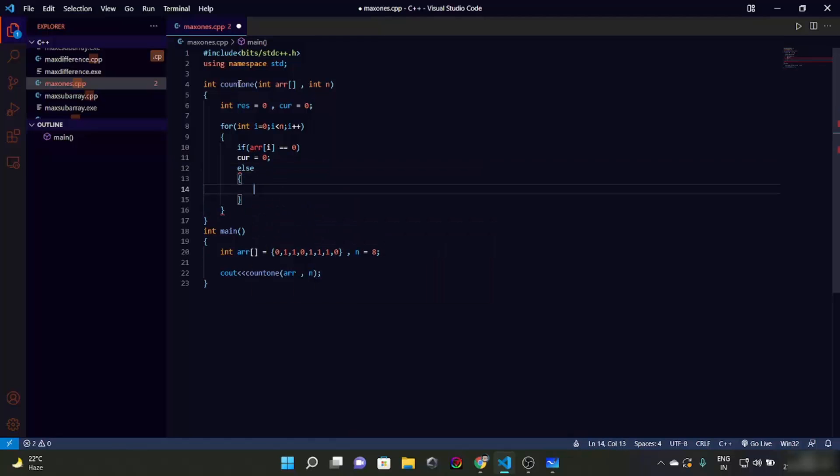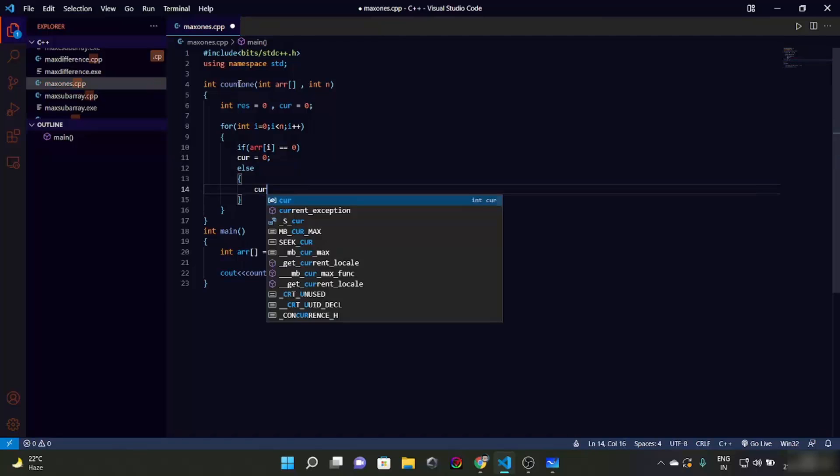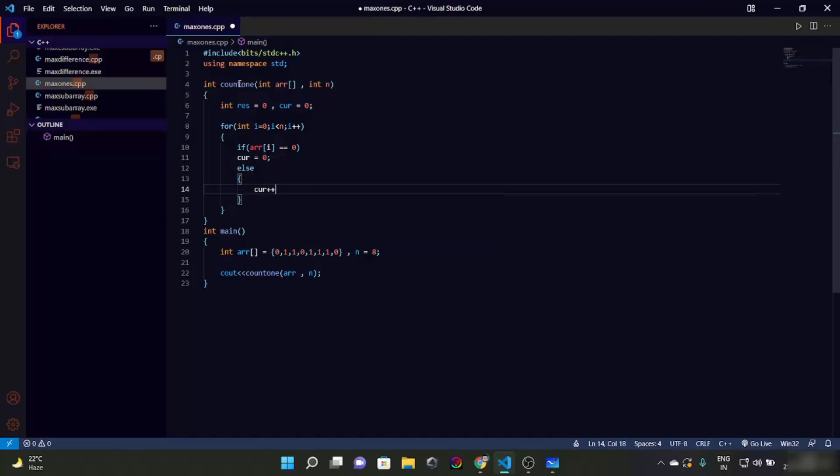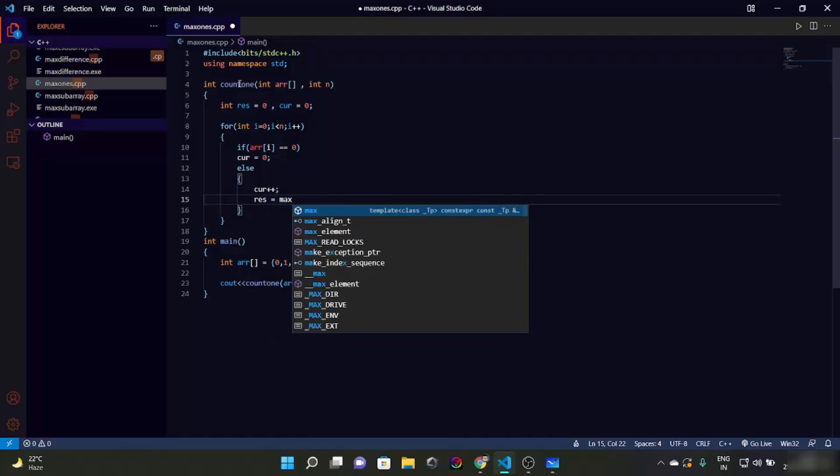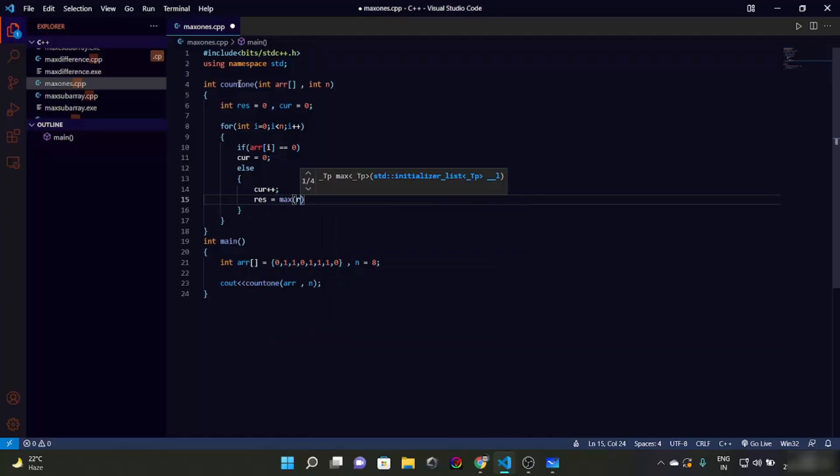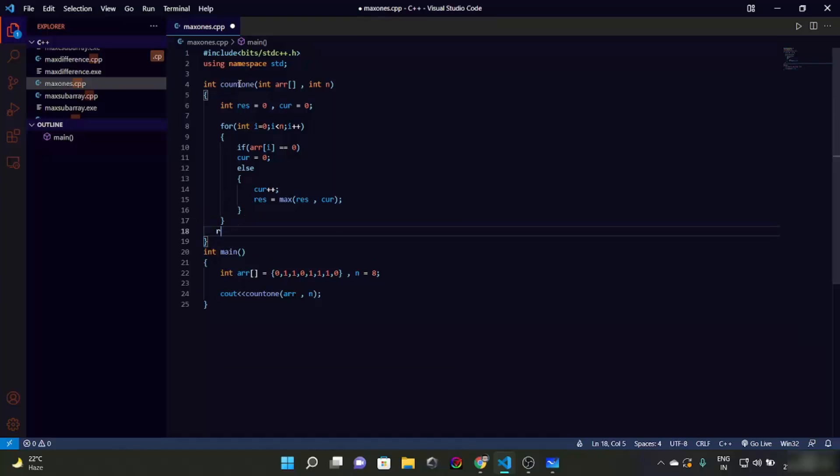Now we will write: if arr[i] is equal to 0, curr equals 0. Else what we are going to have here is we are going to increase curr value and we are going to have res as max of curr and res. And then we are just going to simply return the res.